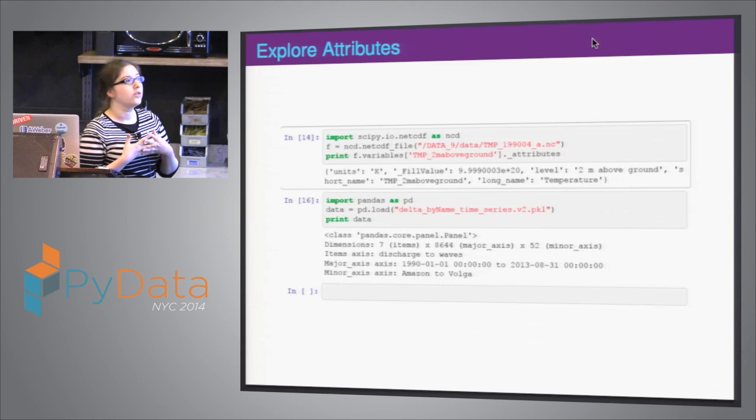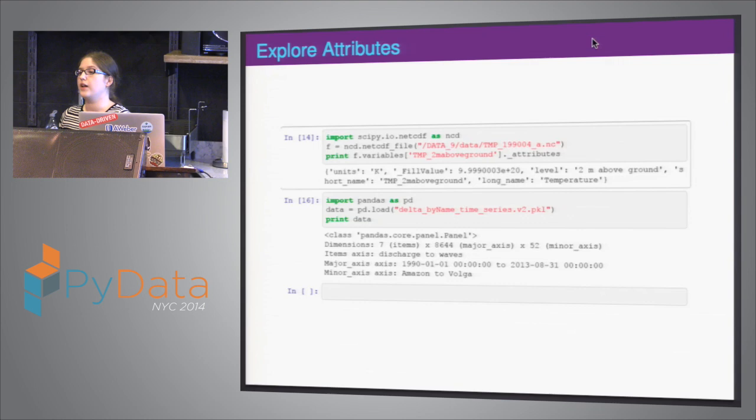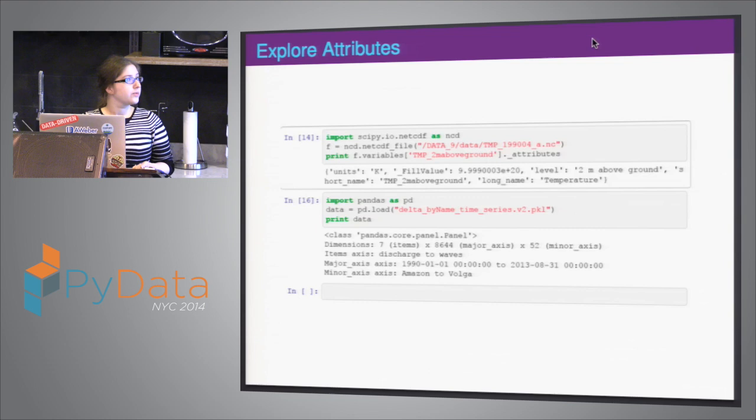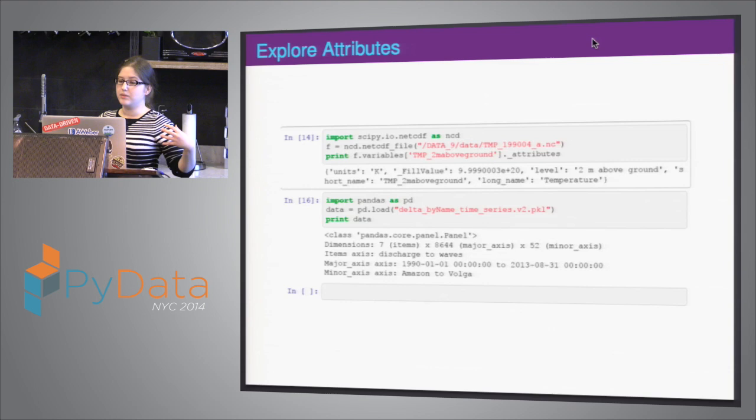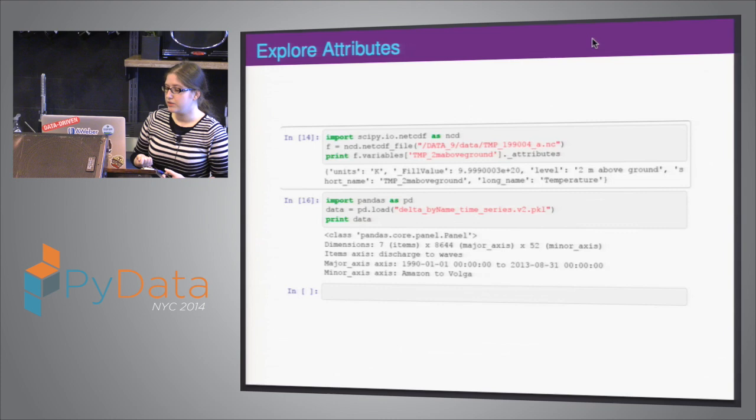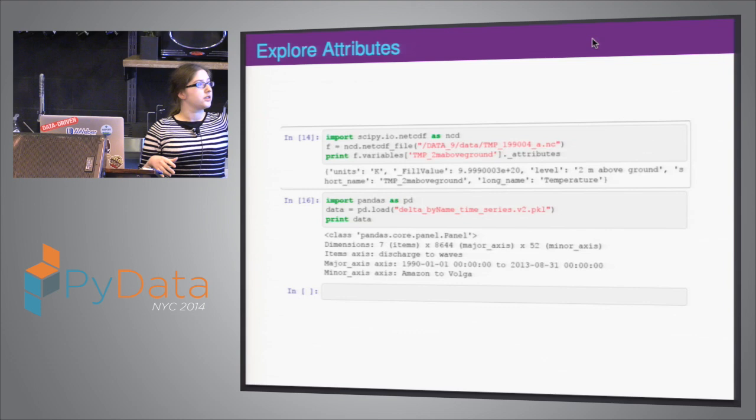NetCDFs and HDFs are the most fantastic file formats because they try to be self-documenting. We can load in our data and just start printing out the attributes, start printing out your column names so you start knowing what you're working with. Because if you didn't print this out and just plotted it, what dimension would you have plotted?